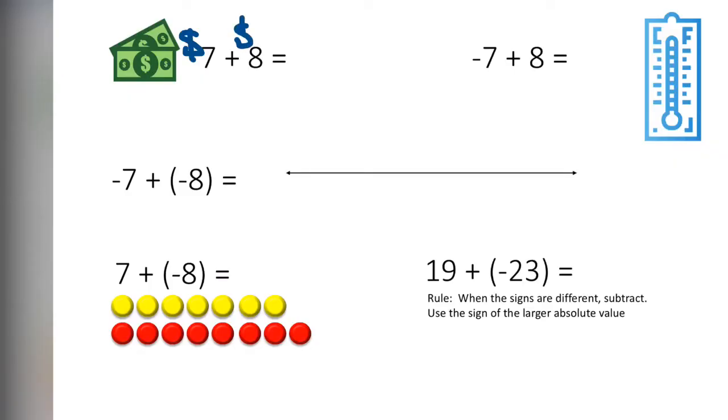Another way to think about integers is money. Sometimes you owe money. Sometimes you have money. If you have 7 dollars and 8 more dollars, you have 15 dollars.